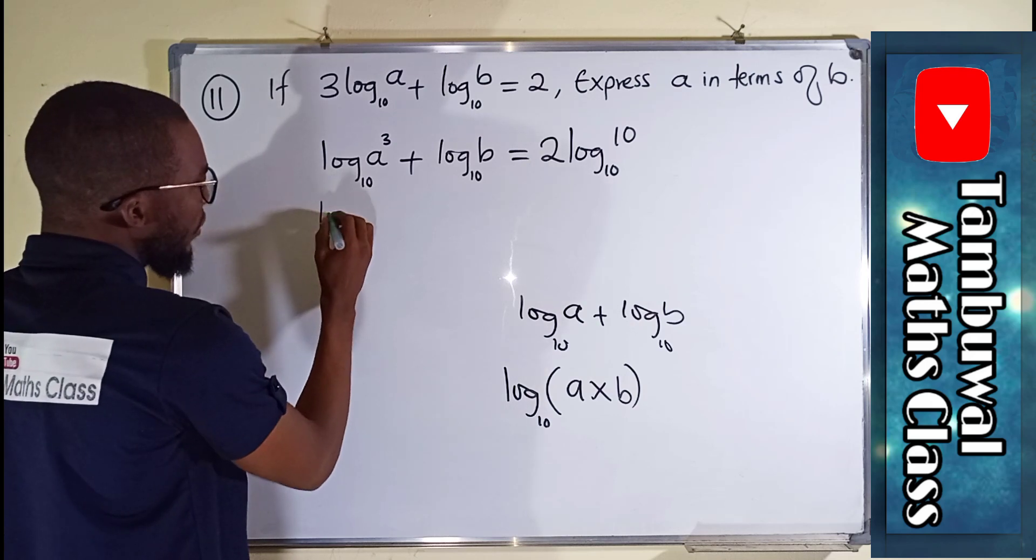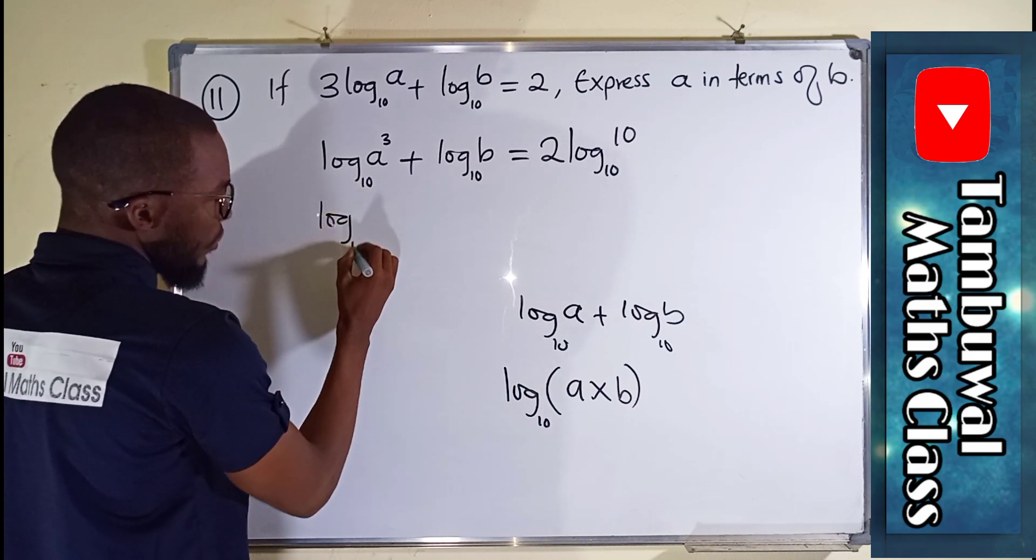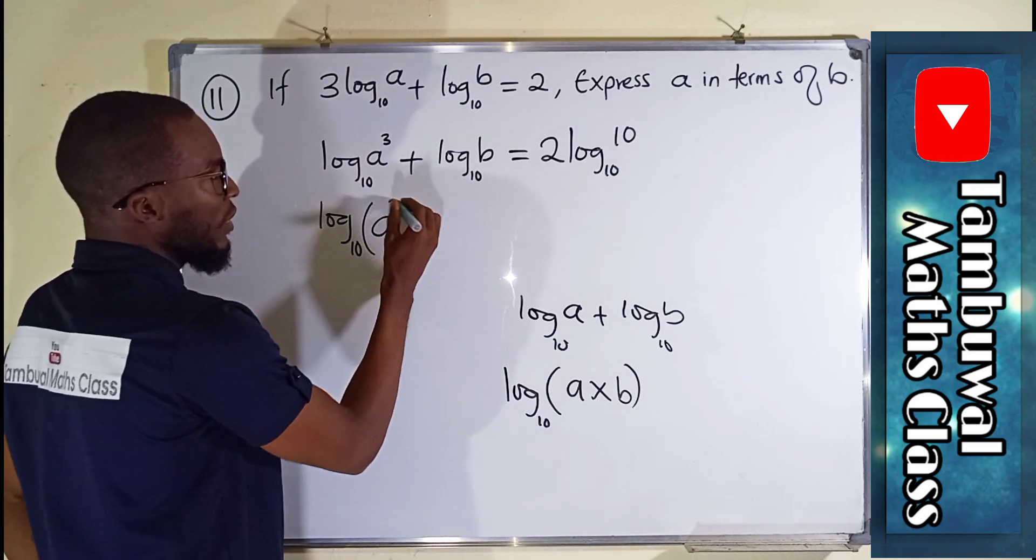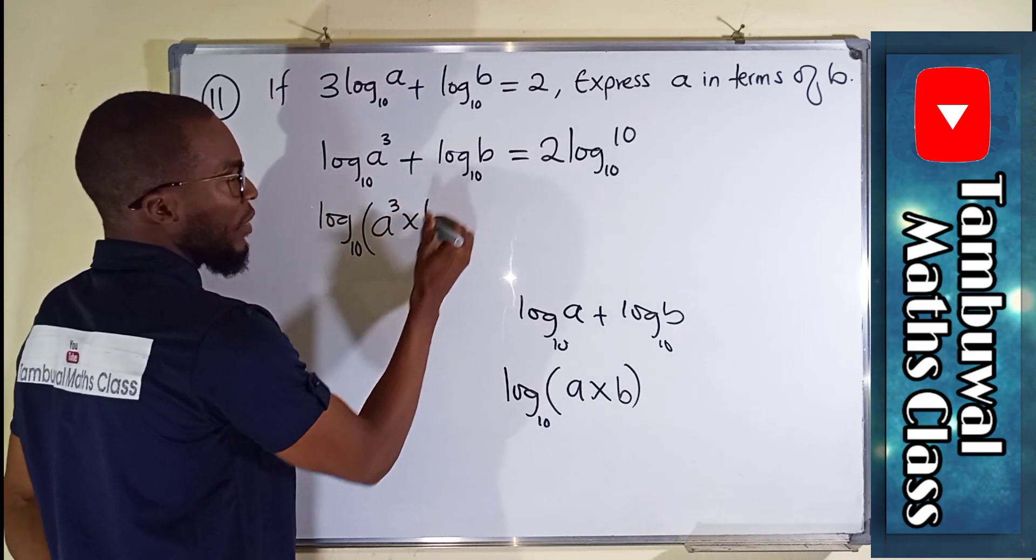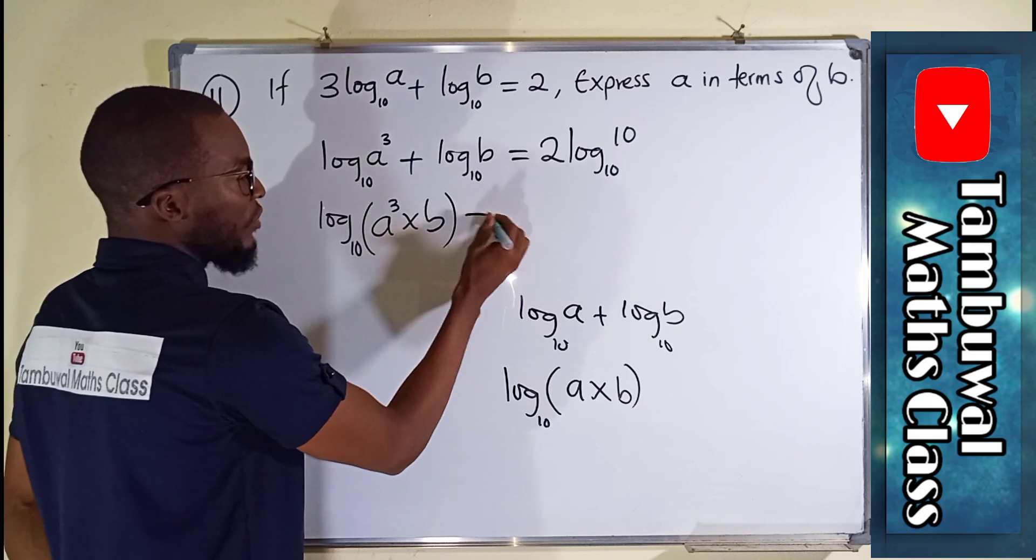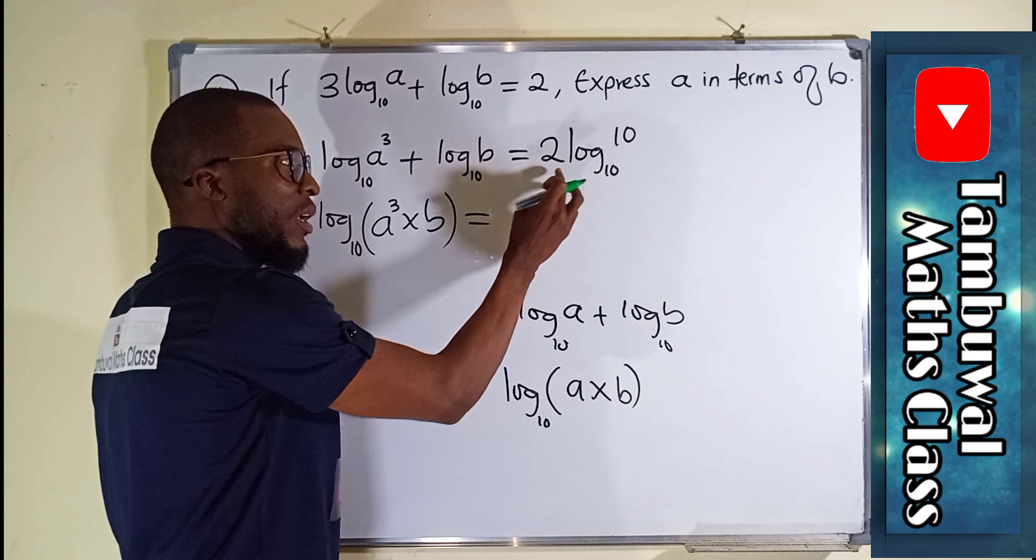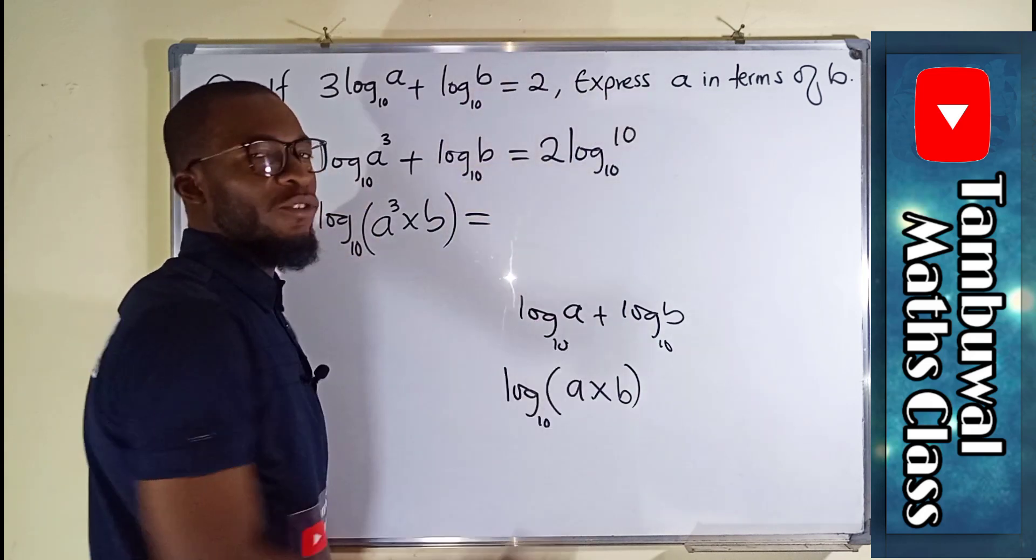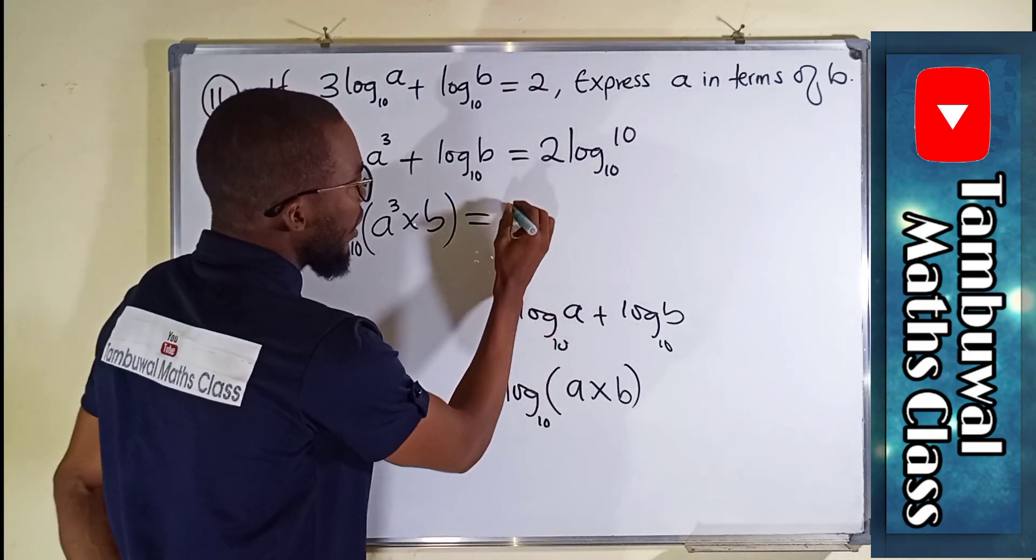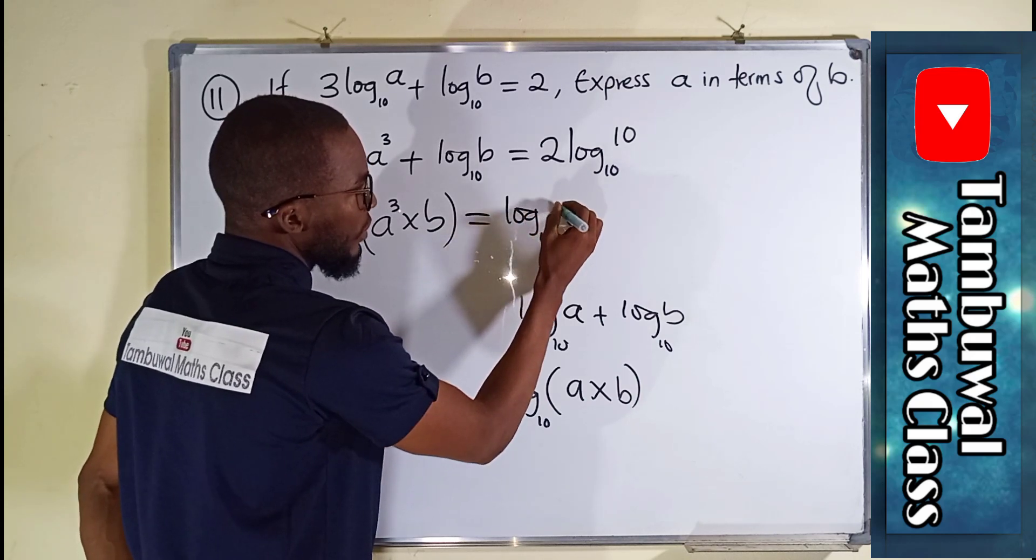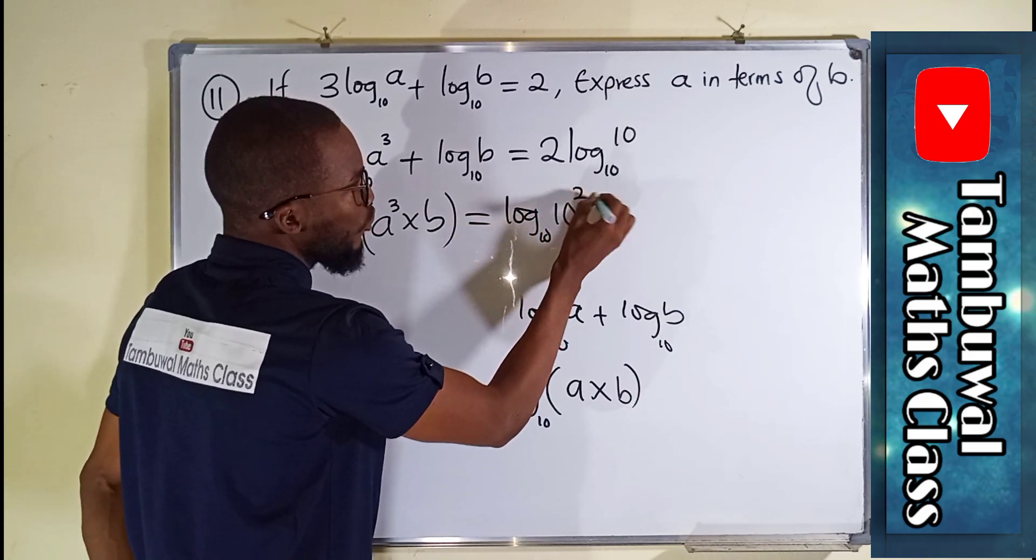We can say log to the base 10 of A³ multiplied by B. And to the right we can apply that law that says if you have any constant multiplying your log, that constant can serve as the power of your number. So here we have log base 10 of 10².